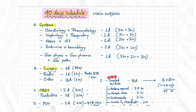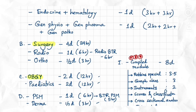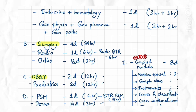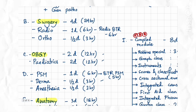For Surgery I've allotted four days. For Radiology I've allotted one day since the Radiology BTR is around six hours and you get a chance to watch about six hours of video each day. For OBG I've allotted two days — fewer days because I've already allocated time for both OBG and PSM in the early morning sessions.